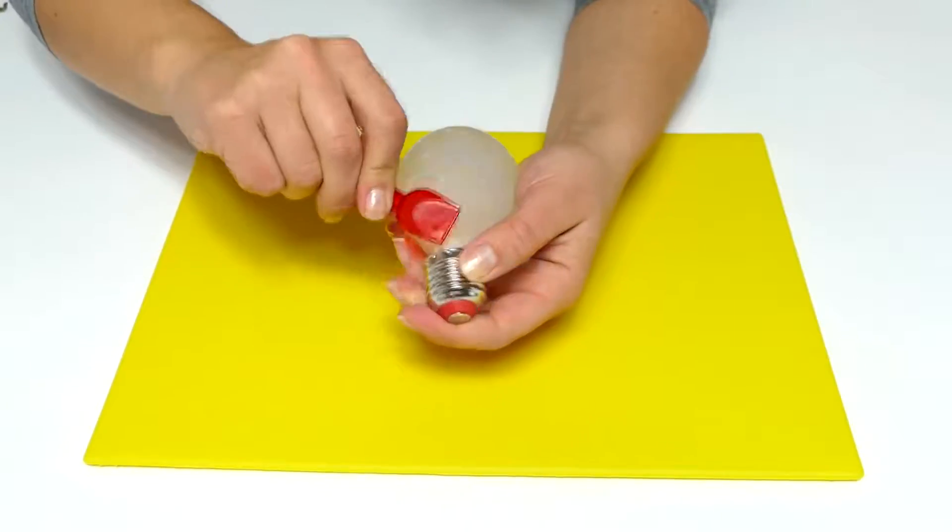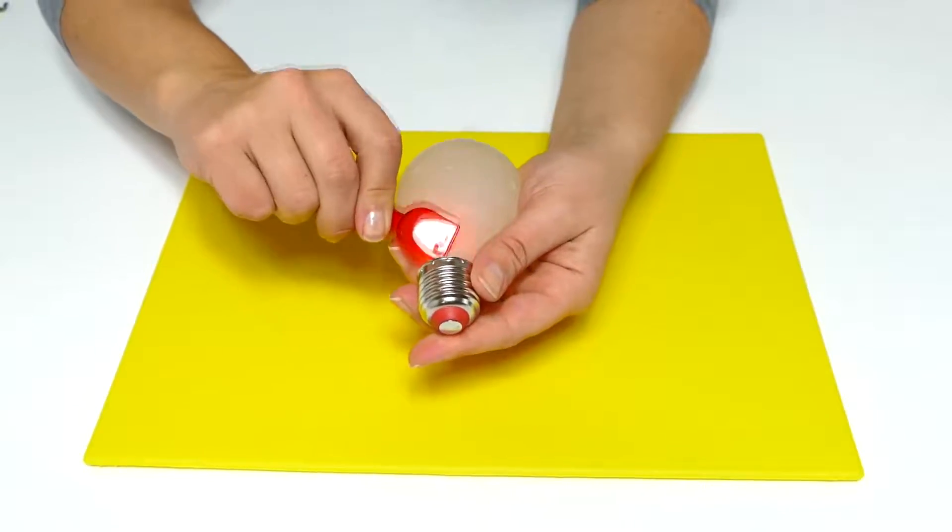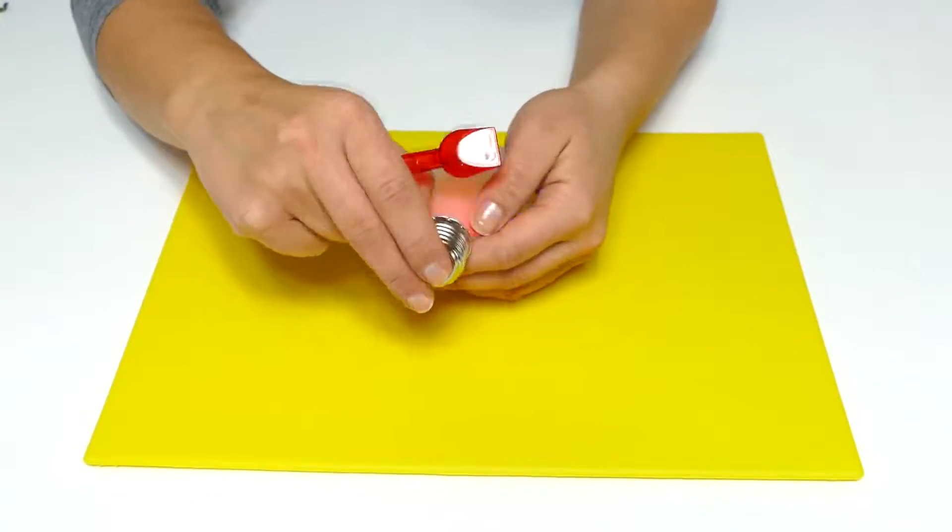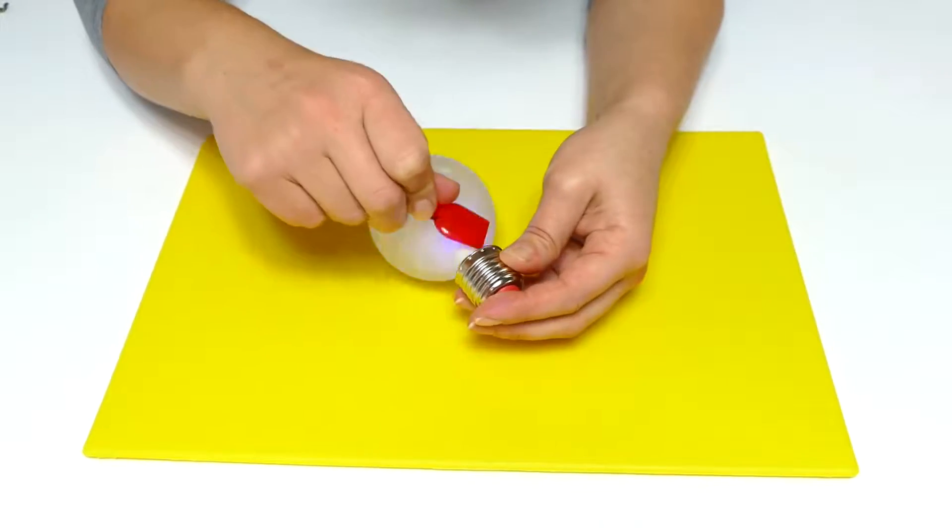It is very important that the shape of the anti-stress balloon is the same as that of a conventional light bulb. So we need to keep adjusting it until it looks perfect.